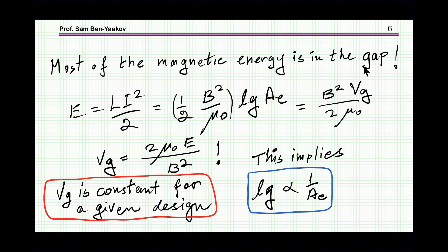On the other hand, energy is LI² over two. We know what the energy is that is supposed to be stored in the magnetic element, and it turns out that the total energy equals the energy within the gap.